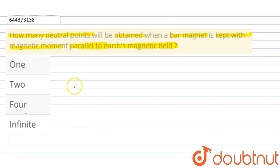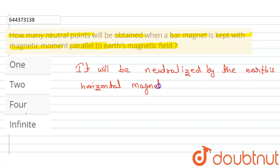As we know, the magnetic field lines due to a bar magnet placed in our space are neutralized by the horizontal component of the magnetic field. It will be neutralized by the earth's horizontal magnetic field.